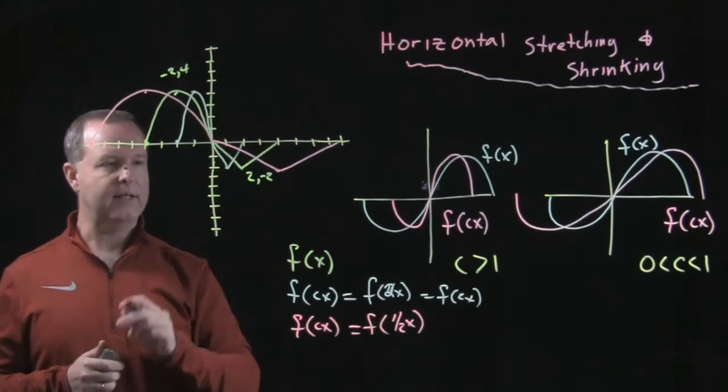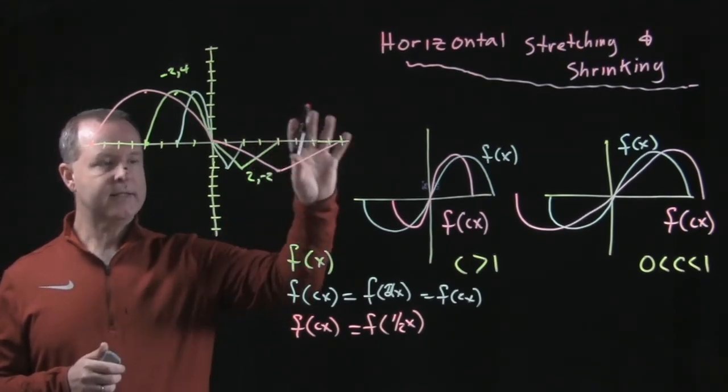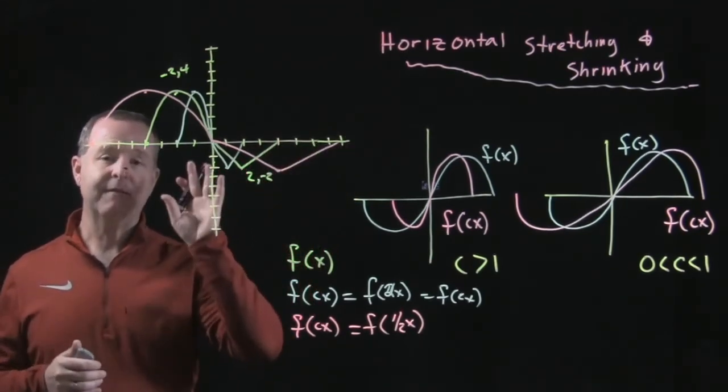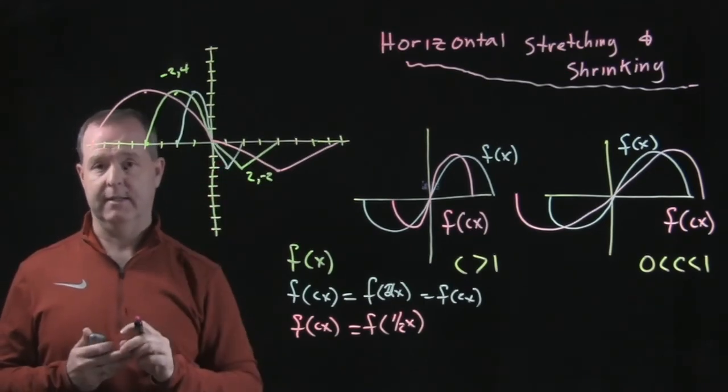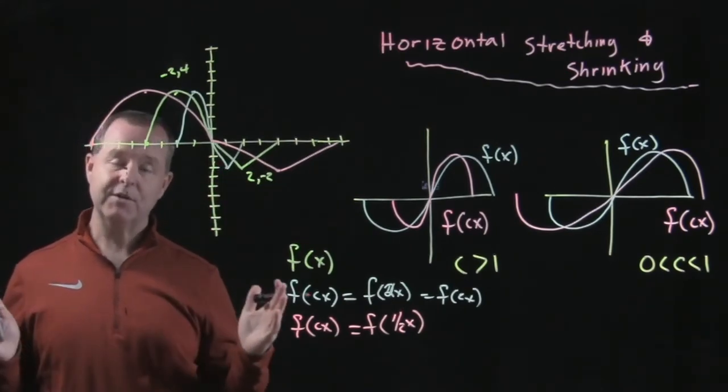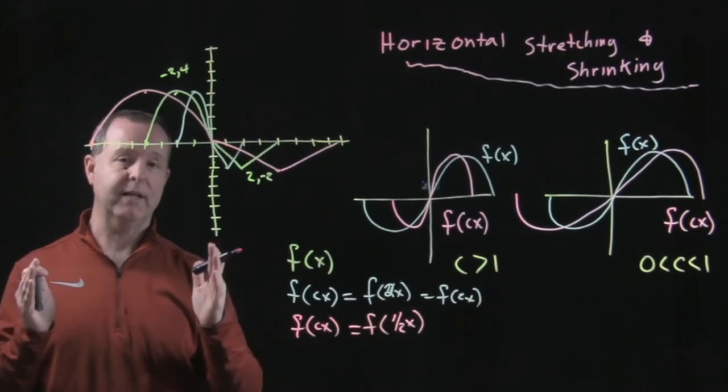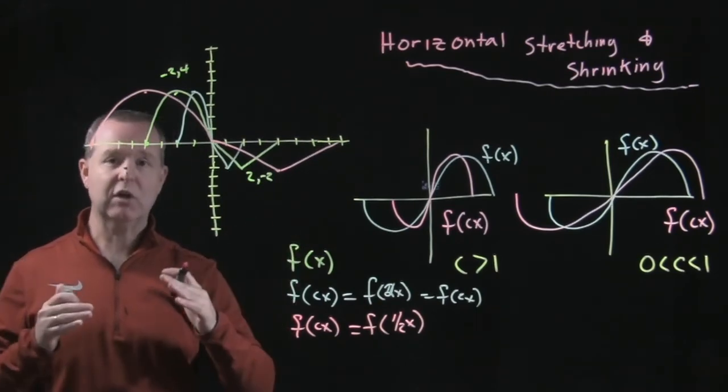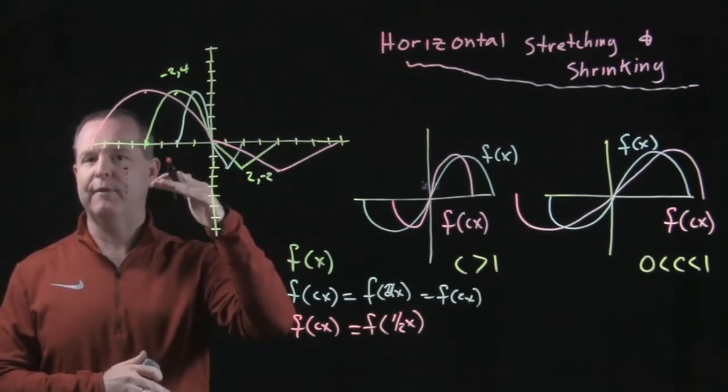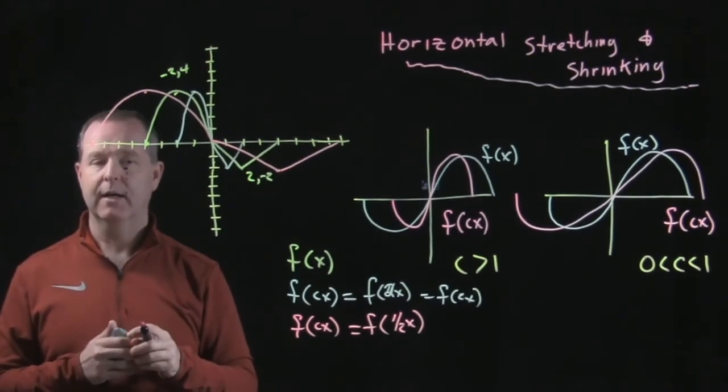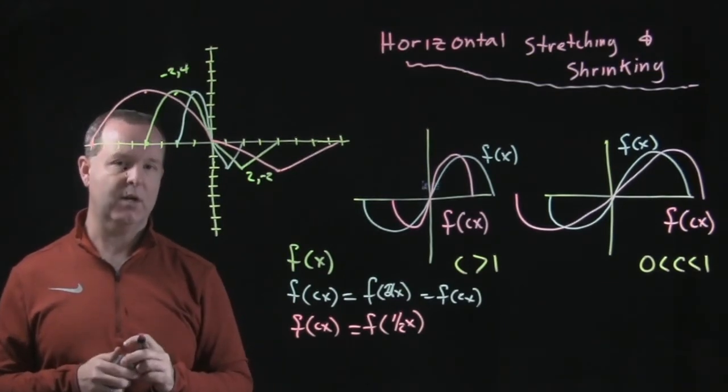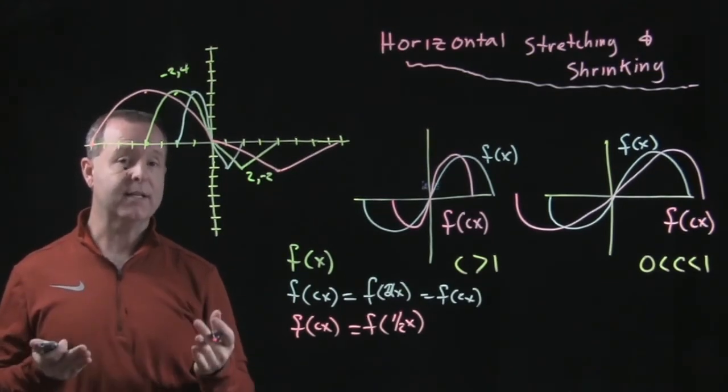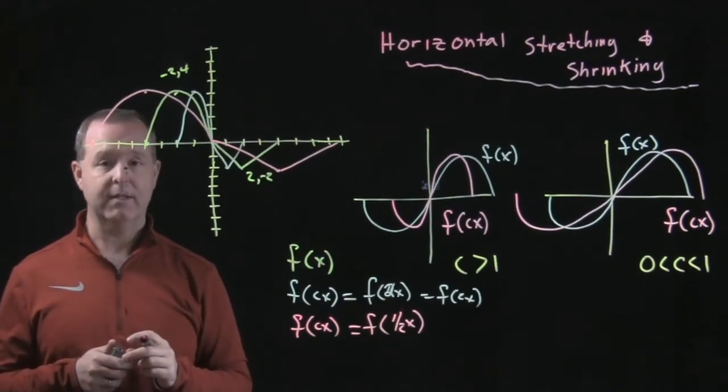The other thing I want to leave you with is some of these graphs, you have to be very careful what the scale is. Because one graph actually might be a horizontal stretching, but it's going to look like a vertical squishing or something it might be. So be really careful what the points are in the scale of the graph so you can determine what is happening and what is not happening.